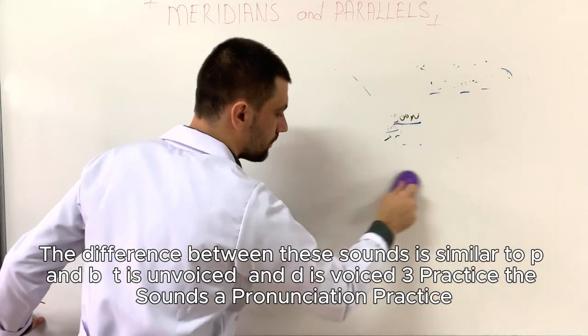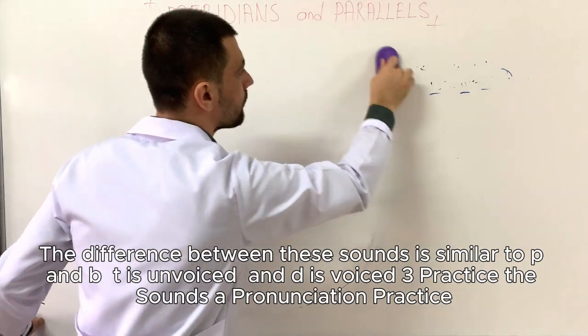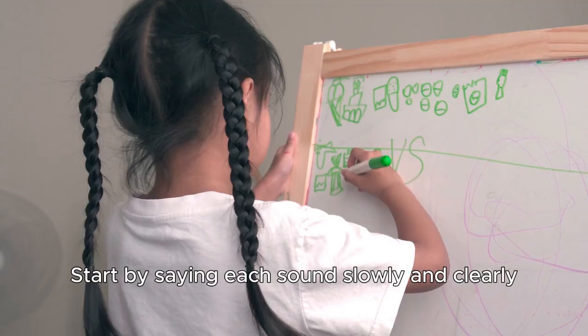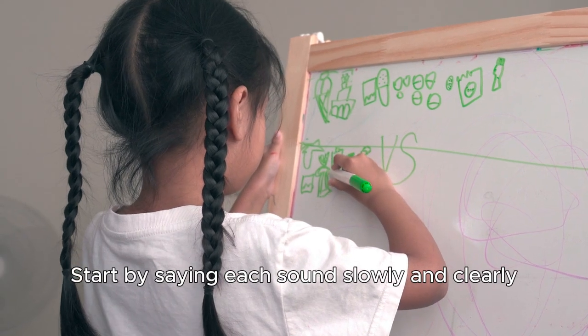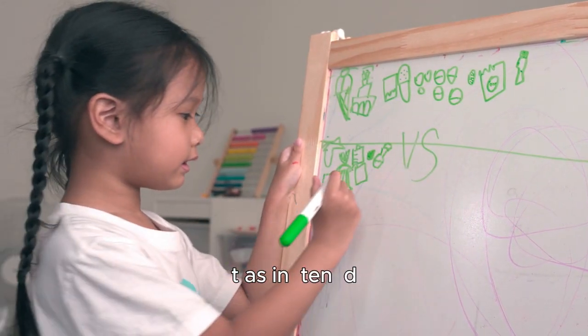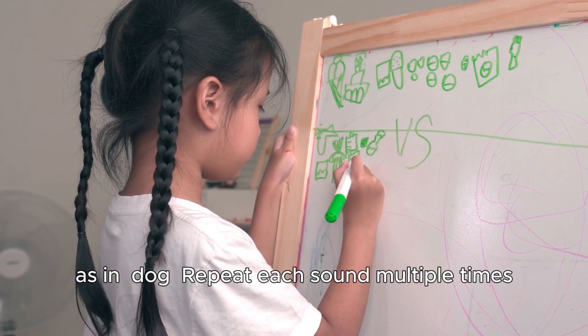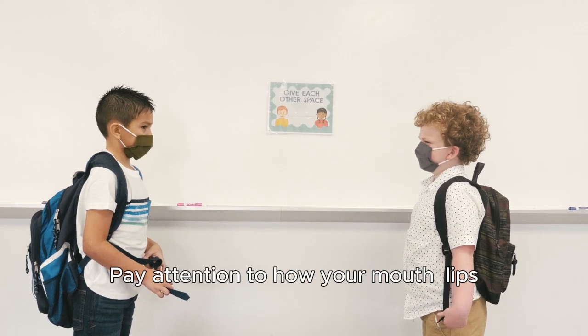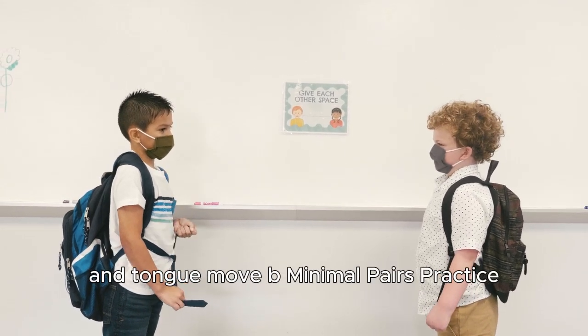Practice the sounds. Pronunciation practice: Start by saying each sound slowly and clearly. P as in pen, B as in ball, T as in ten, D as in dog. Repeat each sound multiple times. Pay attention to how your mouth, lips, and tongue move.